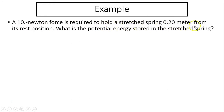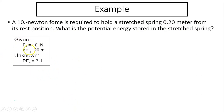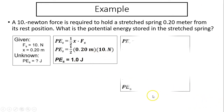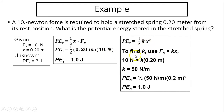Example: A 10-newton force is required to hold a spring 0.2 meters from its resting position. What is the potential energy in the stretched spring? We know Fs and x, so use PEs equals one half x times Fs. Plugging in gives PEs equals 1 joule. Alternatively, use Hooke's Law to find k first, then substitute into PEs equals one half k x squared to get the same result.